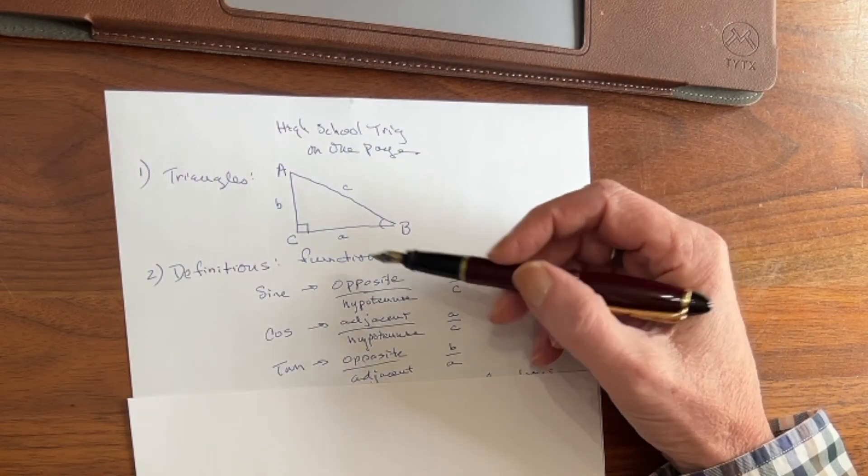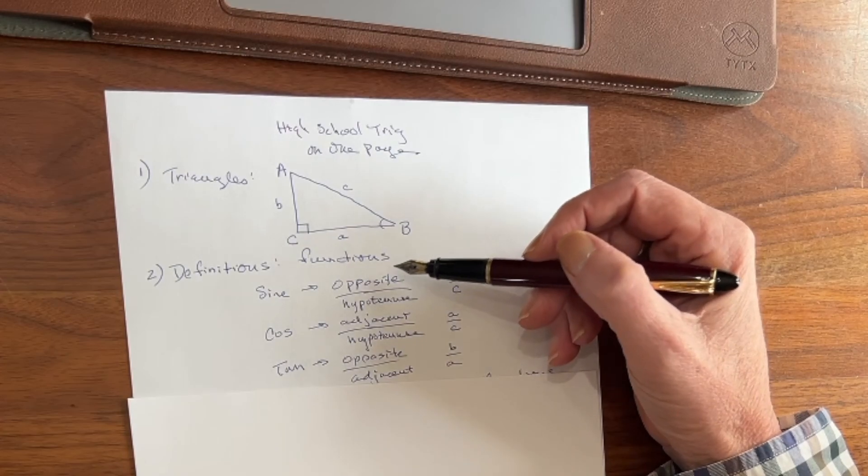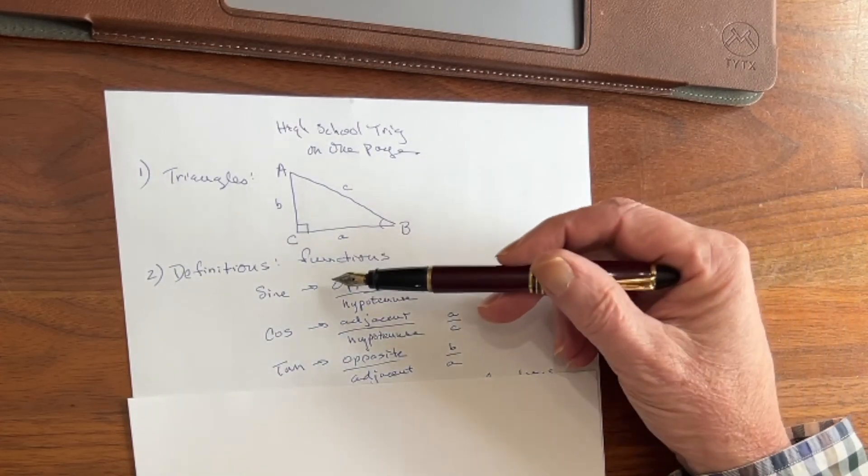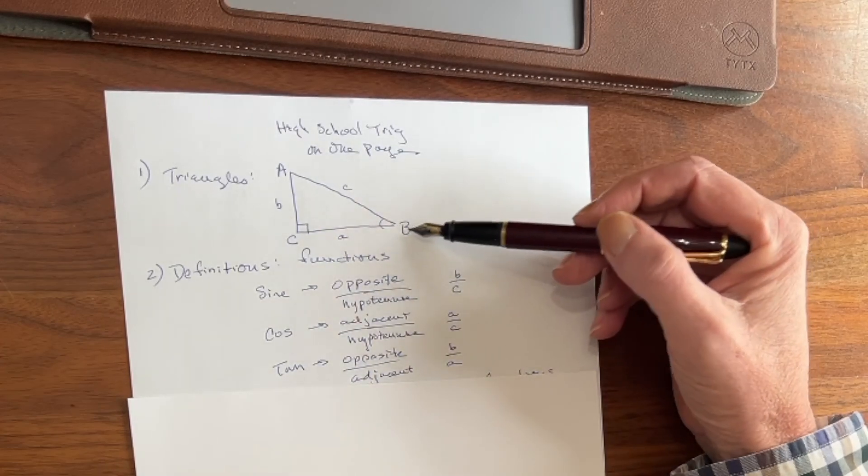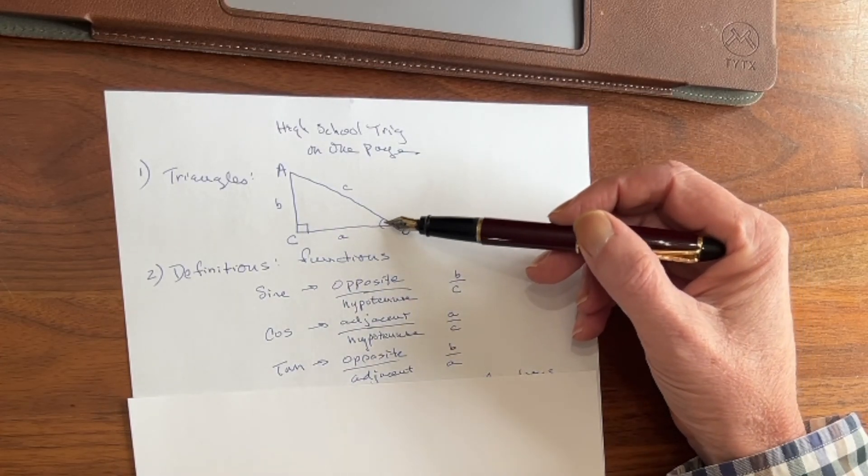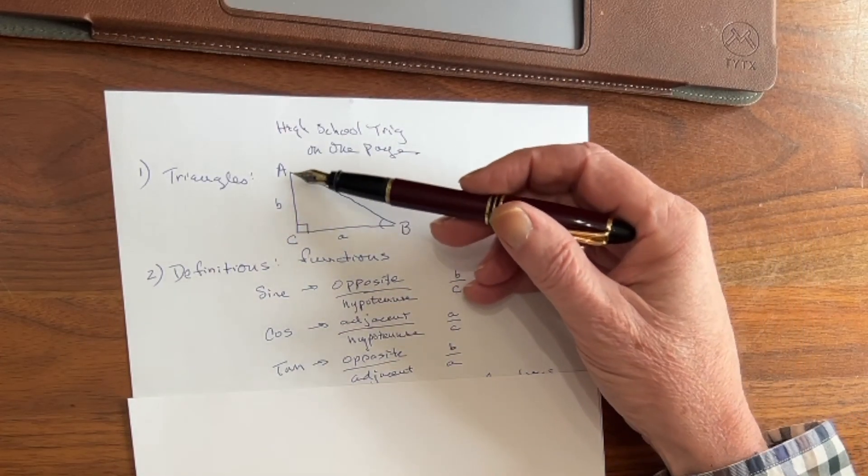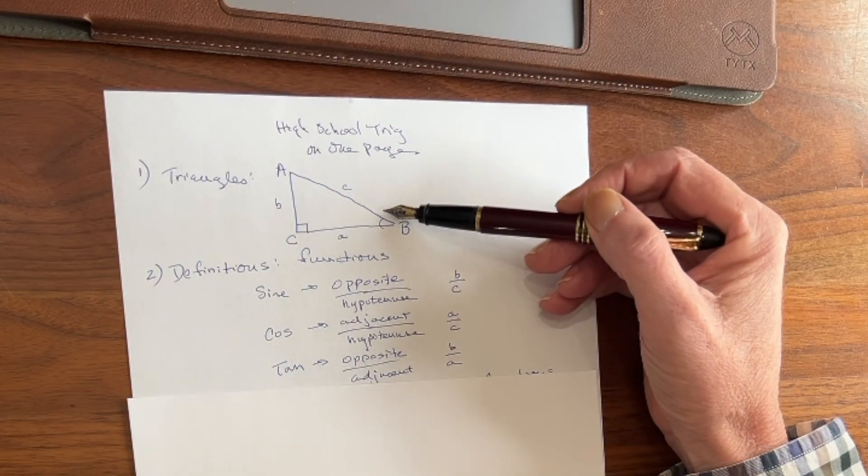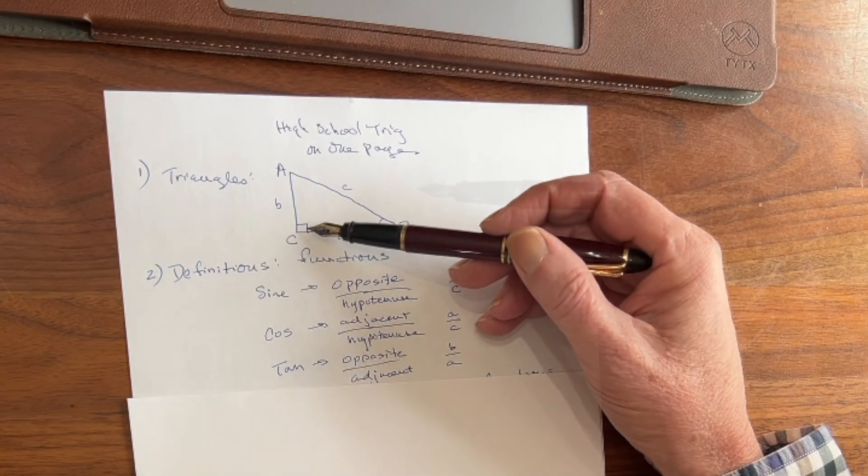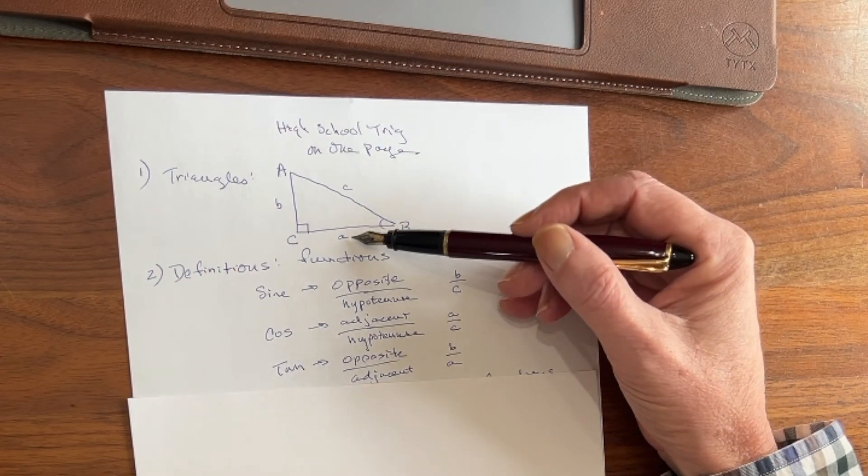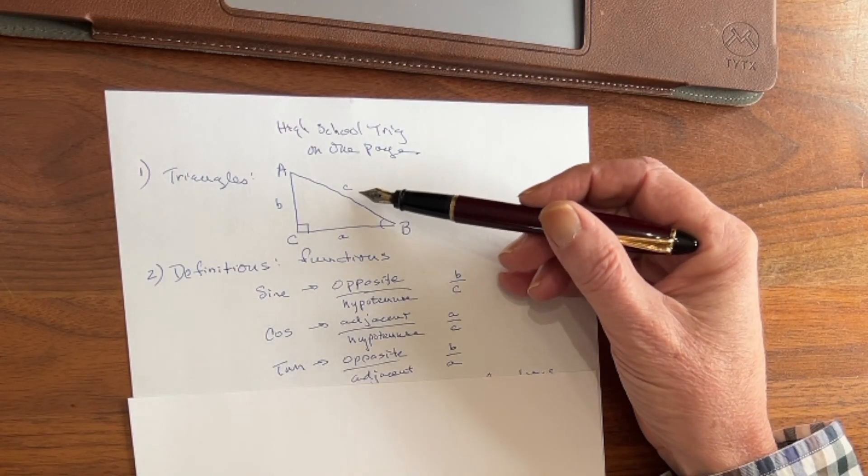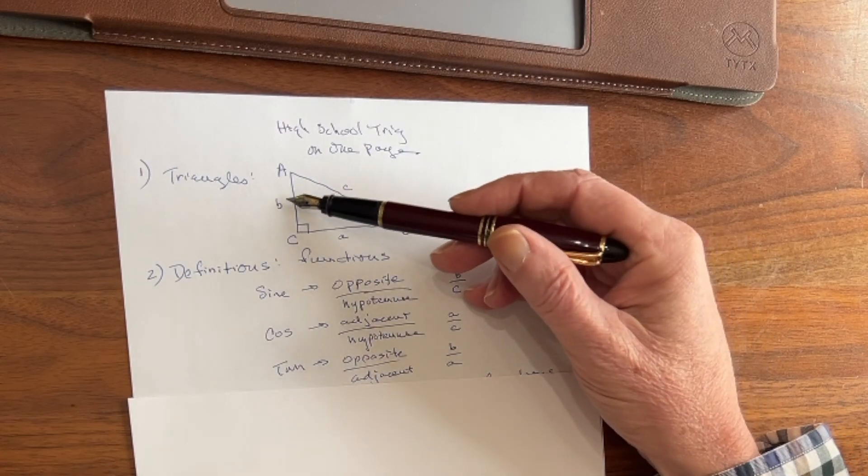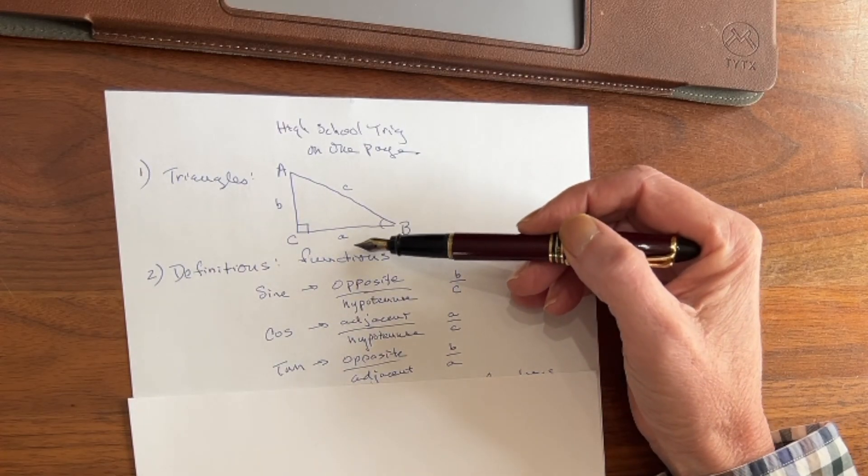Now let's look at some definitions or functions in trigonometry. There are really only three that we need to worry about. The first one is called the sine, and if we look at angle B here, the sine would be the opposite side over the hypotenuse, and the hypotenuse is the side that's opposite the right angle. The cosine is what's called the adjacent side over the hypotenuse, and the tangent is the opposite side over the adjacent side.